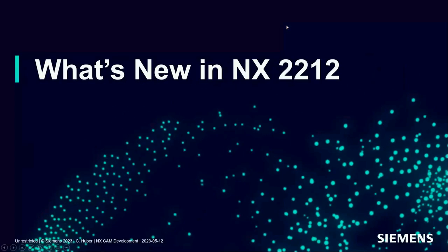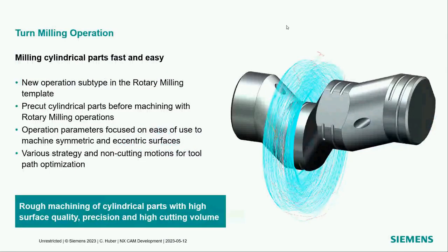Starting with what's new in the latest release of NX: the first operation to highlight is called Turn Milling. It makes milling cylindrical parts much faster and easier than before. Target machines include any mill-turn machine, a standard five-axis machine, or a live tooling lathe. It's a new operation subtype from the rotary milling template used to rough out parts — whether you're doing a crankshaft, something off-center, or even on-center.